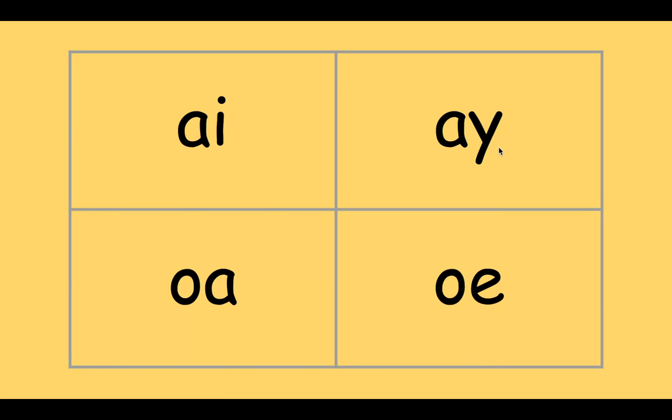Next word: 'tray.' That's also AY—comes at the end. Next two-syllable word: 'email.' That's AI in 'mail,' the second syllable. The A sound is right in the middle.